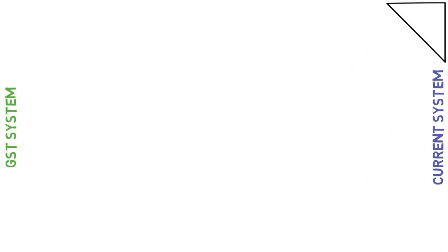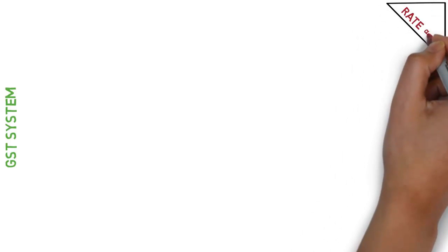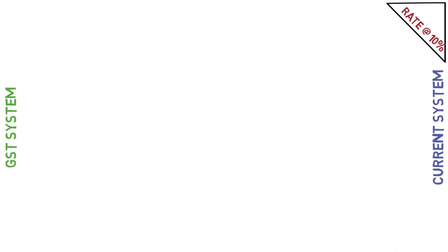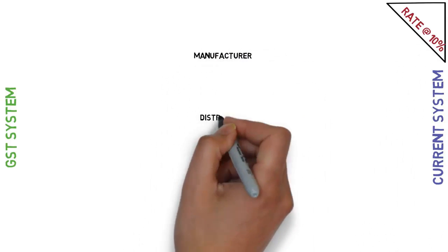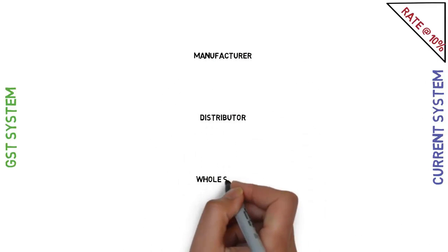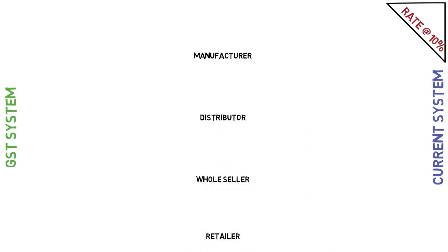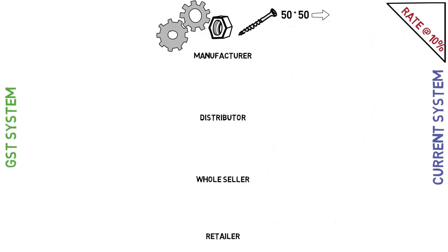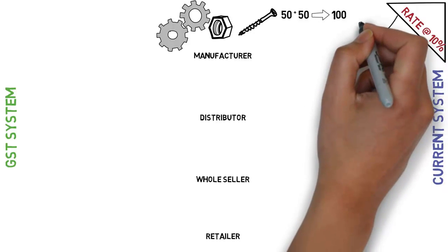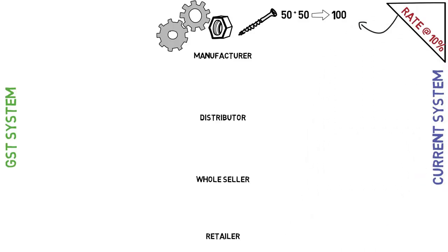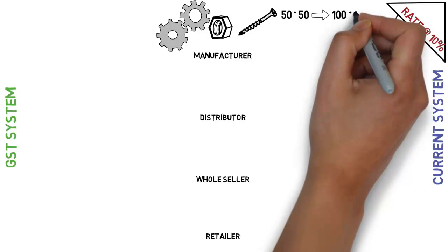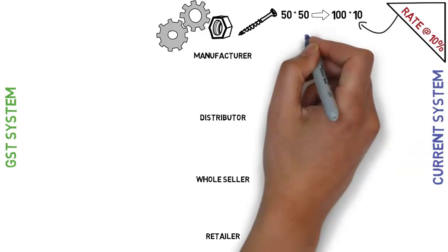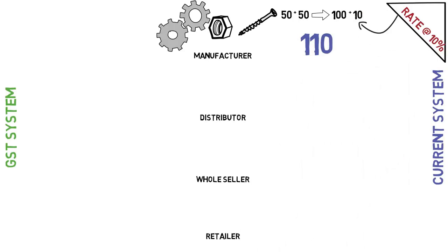So the question is: how is GST different from the current taxation system in India? I'll explain this with a simple example, considering a simplified tax rate of 10% at each level. There are generally four levels: manufacturer, distributor, wholesaler, and retailer. The manufacturer buys raw material worth rupees 50 and manufactures a product adding 50 rupees of value, making the product worth 100 rupees.